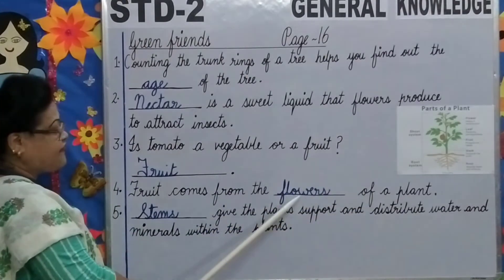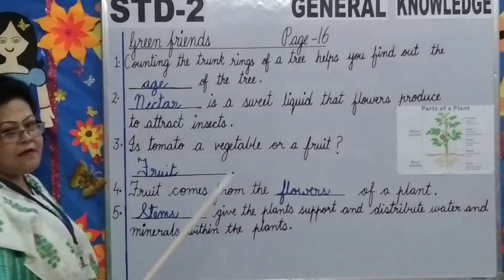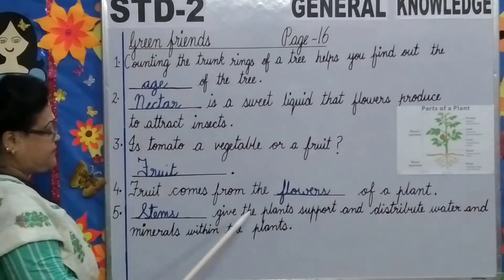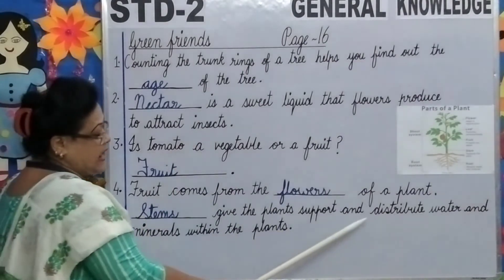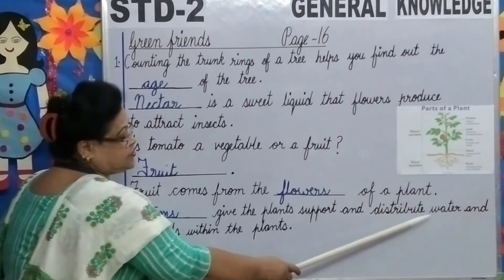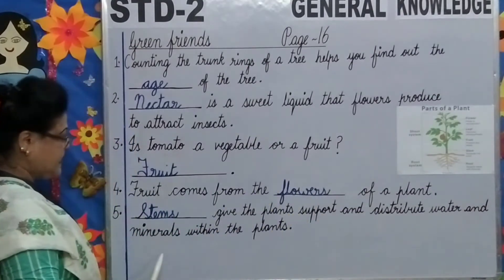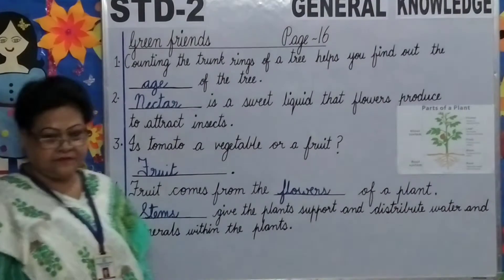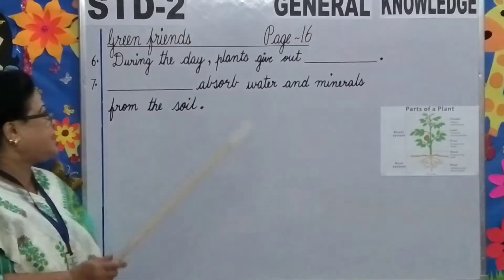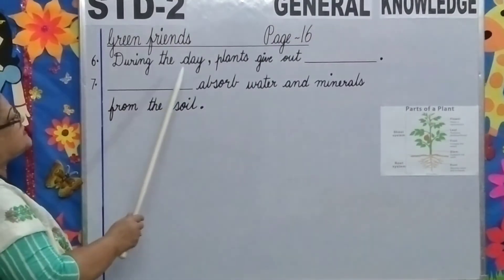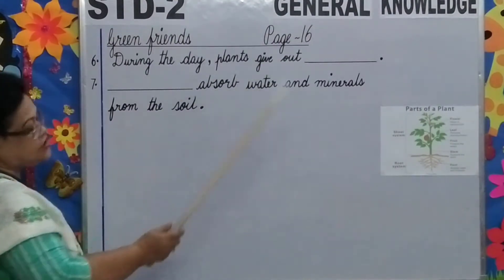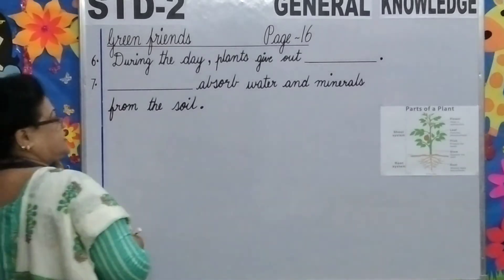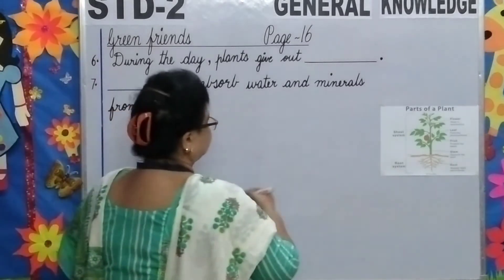Fruit comes from the flowers of a plant. Number 5: Stems give the plants support and distribute water and minerals within the plants. Number 6: During the day, plants give out oxygen. What do plants give out during the day, children? Oxygen.